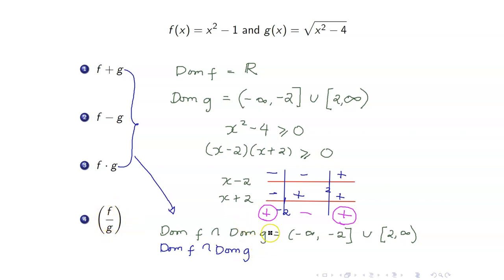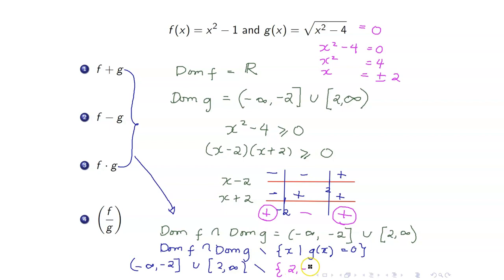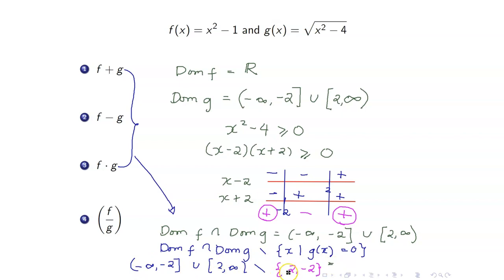Lastly, for the domain of f over g, it equals the intersection minus the values which make the denominator equal to zero. The intersection is (-infinity, -2] union [2, infinity). When is g of x equal to zero? When the square root of x squared minus 4 equals zero — squaring both sides gives x squared equals 4, so x equals plus or minus 2. You take away 2 and negative 2. Therefore, those endpoints become open: the domain of f over g is (-infinity, -2) union (2, infinity).